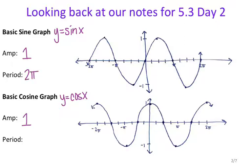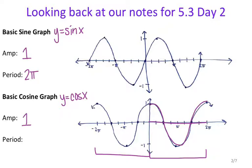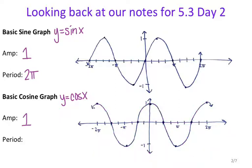For cosine, this portion matches up with this portion on the left. This distance is the period because it's the same — it's the length of one full cycle before it starts to repeat. So the period for cosine is also 2 pi.